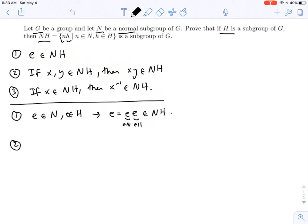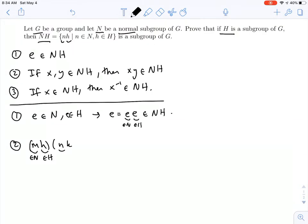So second, I'm going to assume I have two elements in NH. So the first one, let's write it as something like m times h. So the m will be in N, and the little h will be in H. And we're going to multiply this by, say, n times k, where n is in N, and k is in H.